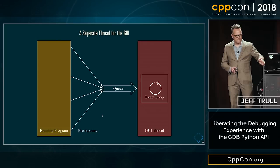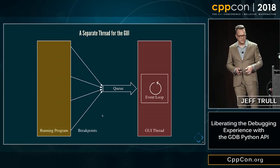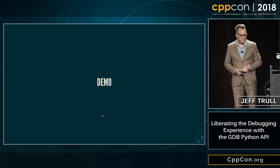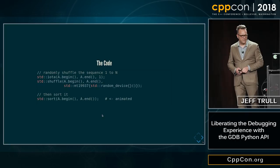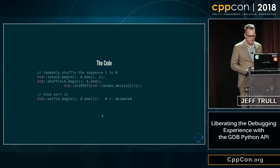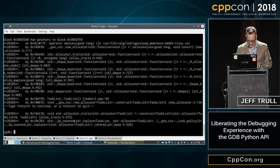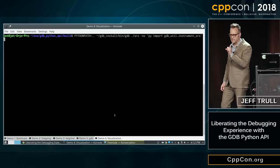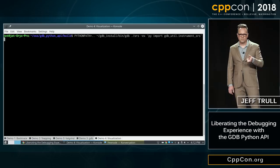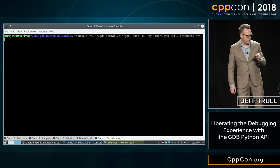This is the system diagram: we have the running program running under GDB, emitting breakpoints through the thread-safe queue, updating the event loop in PyQt. The demo: here's the code. We're just randomly shuffling it, and then the instrumentation all starts when we call sort. If you saw Fred's talk on sorting yesterday, you would have learned that std::sort works by first running introsort, which does a bunch of exchanges via recursive partitioning, and then does insertion sort to finish up. And that's just what you're going to see here.